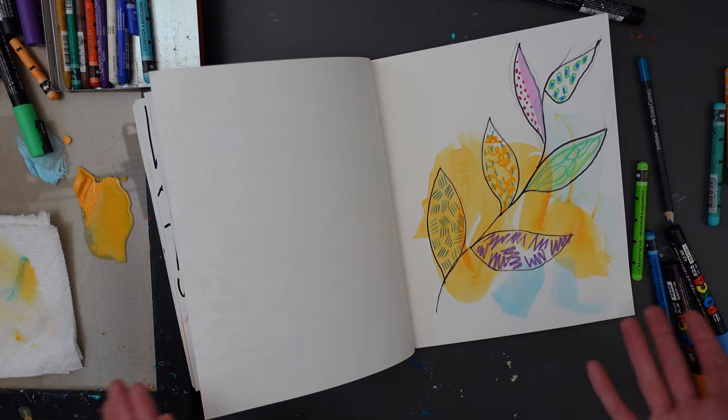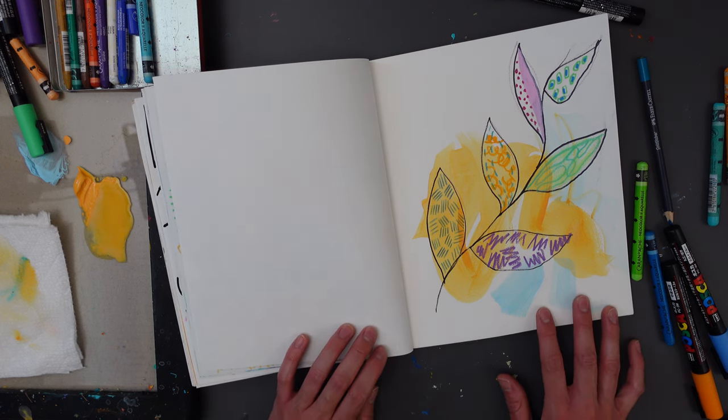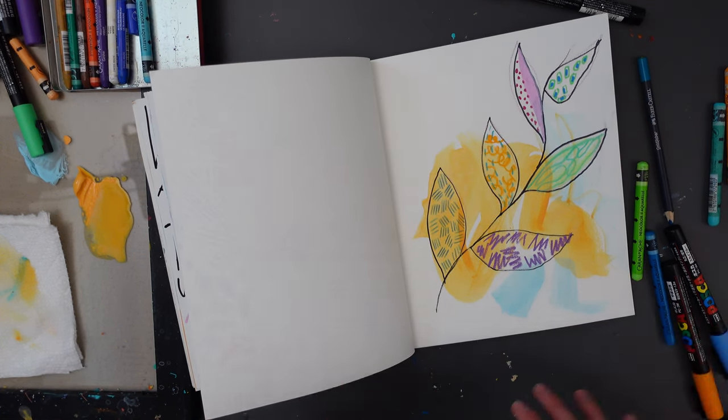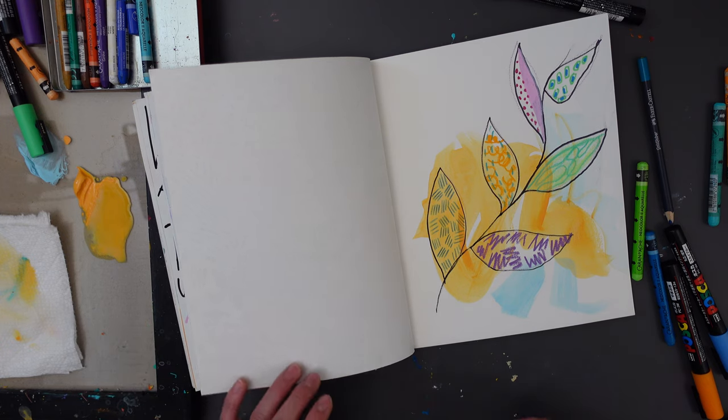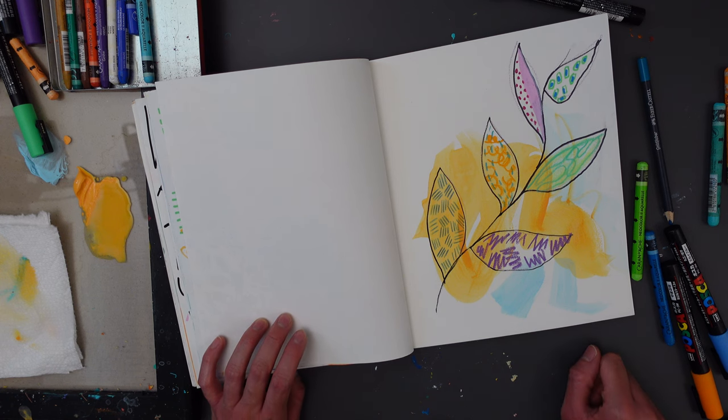All right, and here is my leaf sprig. I'm super happy with this cute little sprig. If you wanted to continue adding more marks, like to the background and kind of where there's more open space, go for it. Again, this is just a simple, easy exercise to add to your sketchbook with pretty much no pressure.